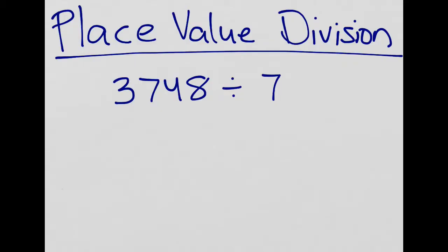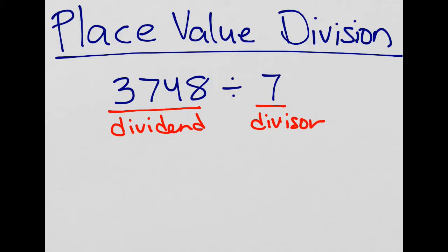When we're dividing, there are two main pieces in a division expression. The first piece is called the dividend — you may have heard that word if you play Monopoly. Then the piece we're dividing it by is called the divisor. The divisor is like the person or thing doing the dividing work — it has OR on the end, often on the end of a word for a person doing something, like actor. The seven is acting upon the dividend, upon $3,748, breaking it up into seven equal groups or into groups of seven.